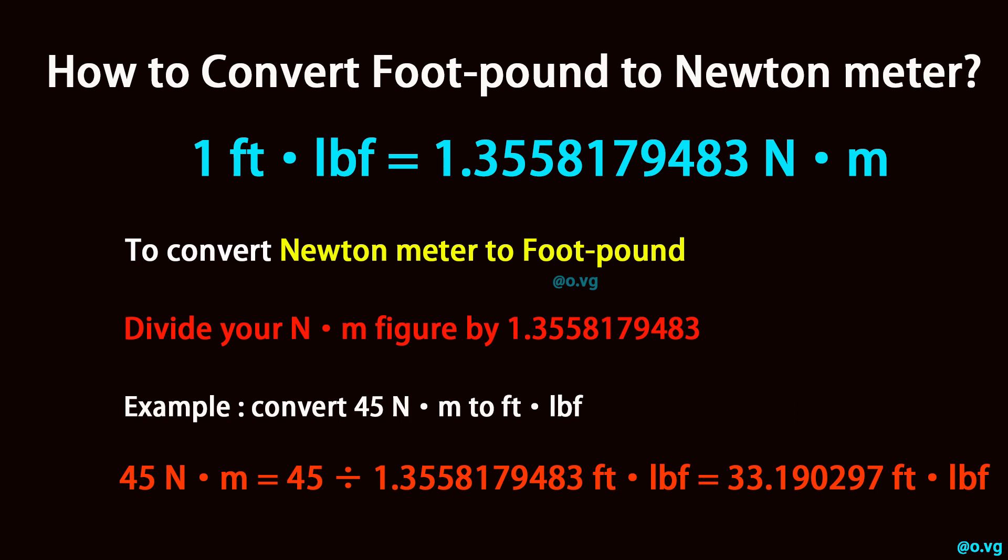Example: convert 45 newton-meter to foot-pound. 45 newton-meter equals 45 divided by 1.3558179483, which equals 33.190297 foot-pound.